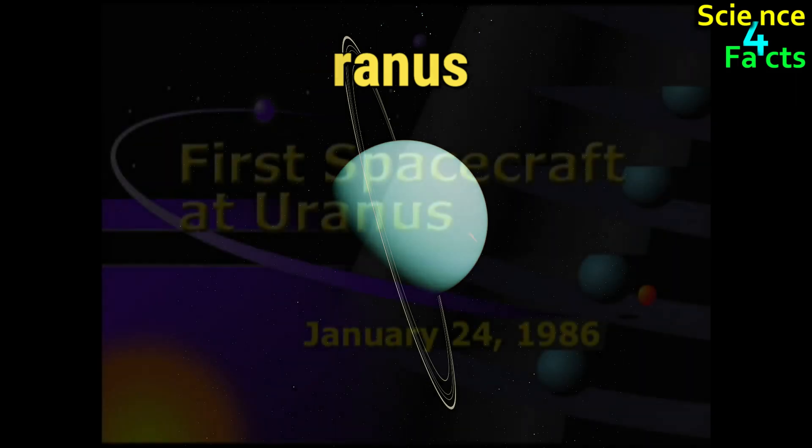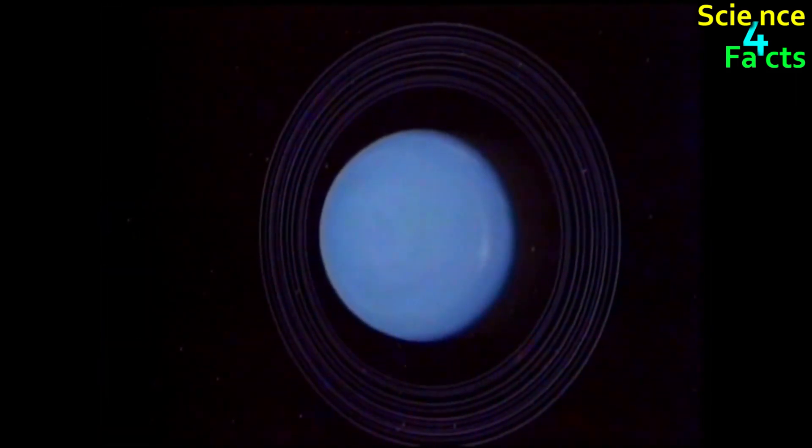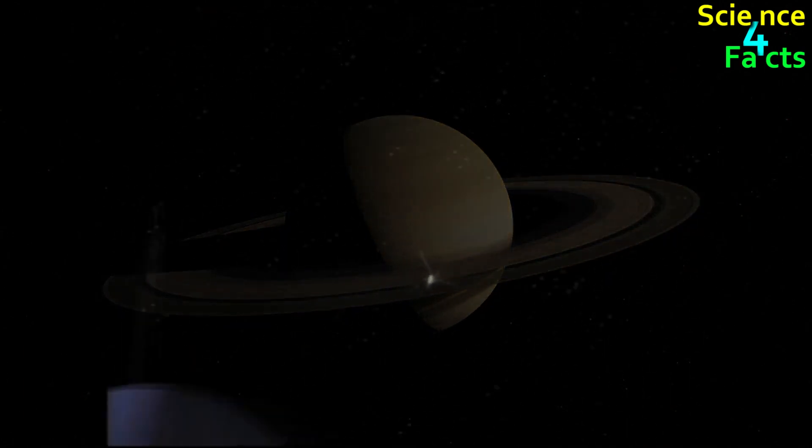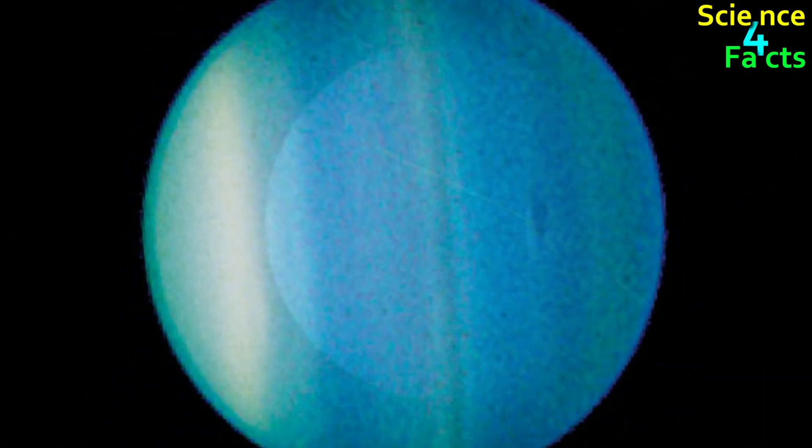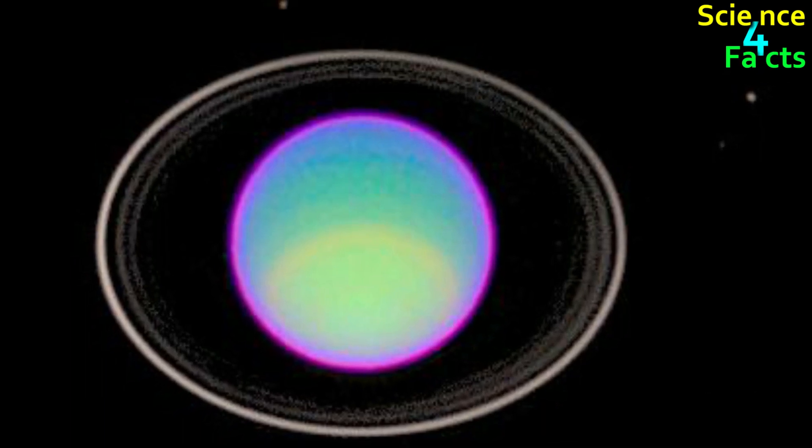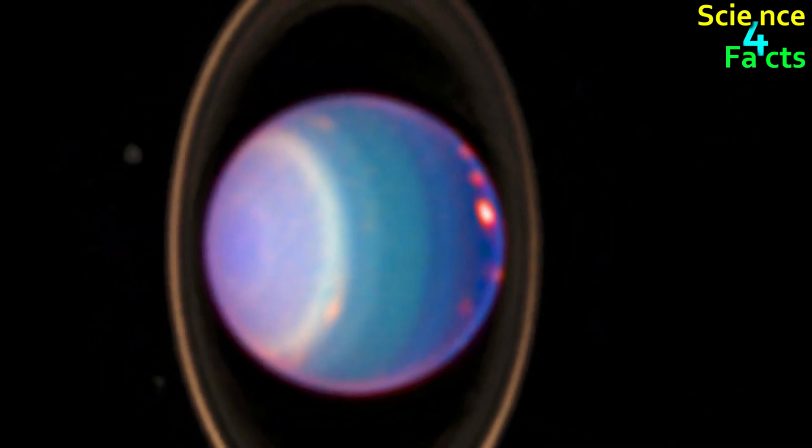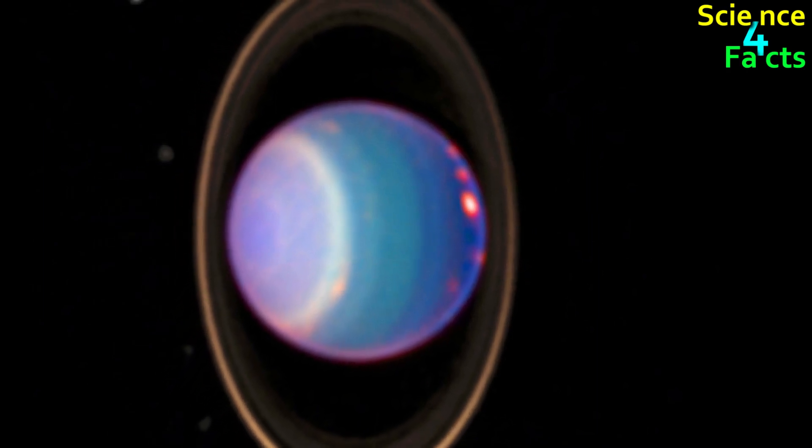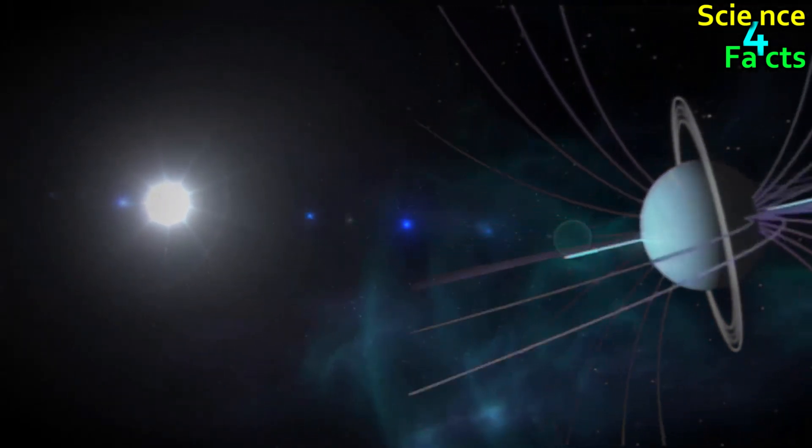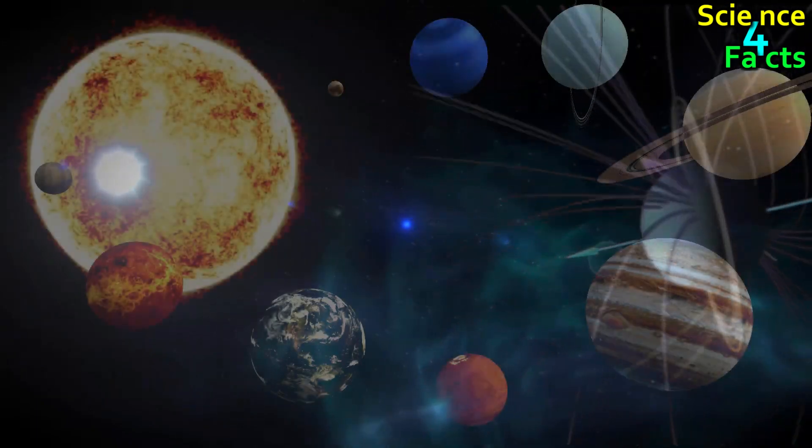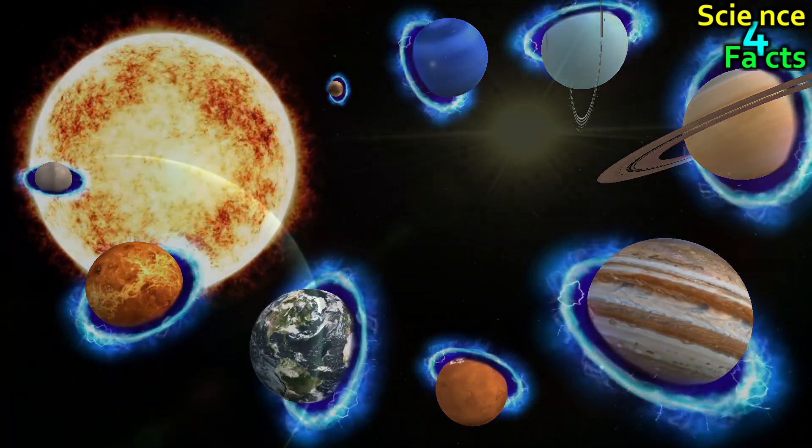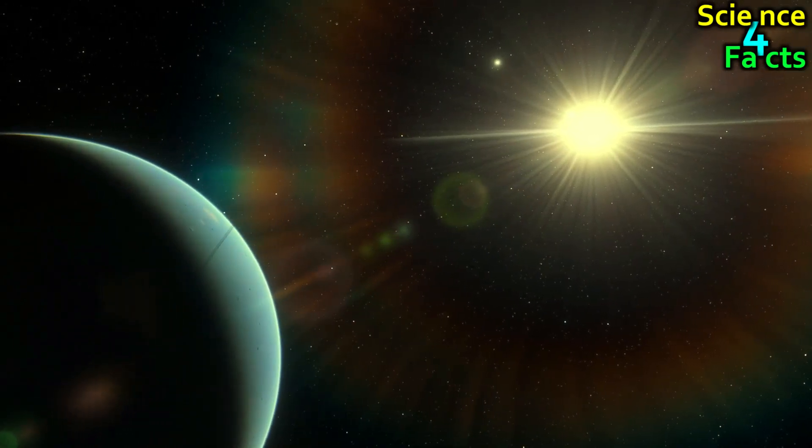Uranus is an ice giant planet, meaning that it is composed mainly of water, methane, and ammonia ices, rather than being dominated by hydrogen and helium gases like Jupiter and Saturn. Uranus also does not have a solid surface like Earth or Mars. Instead, the outermost layer of Uranus is made up of a thick atmosphere of hydrogen, helium, and methane gases. This atmosphere is characterized by faint cloud bands and small storm systems that circle around the planet's equator. Uranus's most unusual feature is its extreme axial tilt, which causes it to essentially roll on its side as it orbits the Sun. This means that Uranus's poles are located where other planets have their equators, and vice versa. This axial tilt also causes extreme seasonal variations on the planet, with each pole experiencing 42 years of continuous sunlight followed by 42 years of darkness.